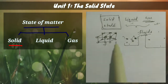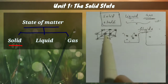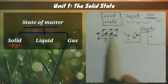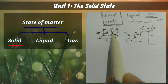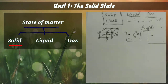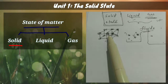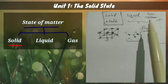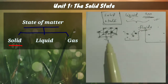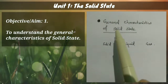We also have to study impurities and defects in solids. For example, in a pure sodium crystal, if one sodium atom is replaced by another atom like chloride, it becomes an impurity. Sometimes an atom is missing from a site — these are defects. We will study their effects on properties, such as how defects can increase conductivity. The first objective is to understand the general characteristics of solid states.